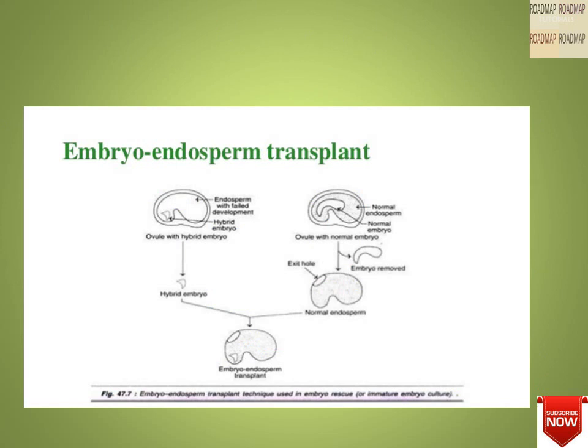In the embryo endosperm transplant, the endosperm with failed development where the hybrid embryo is present is taken — the ovule with the hybrid embryo is taken, and separately the ovule with a normal embryo is taken. Normal endosperm development is seen in the normal embryo. So crossing is done, and then the embryo endosperm transplant is performed.